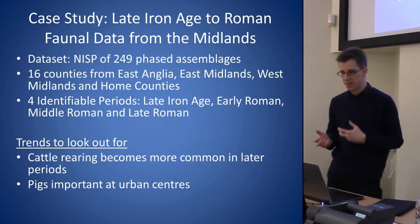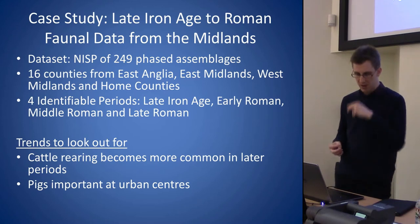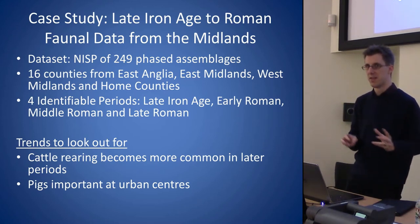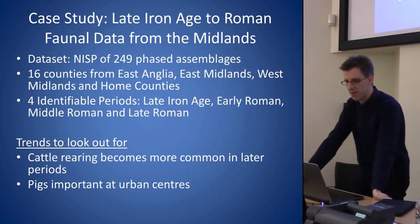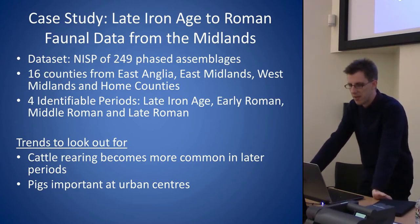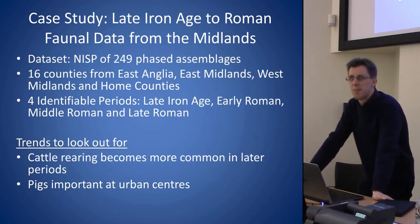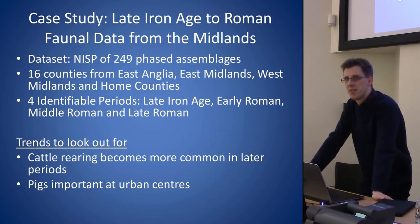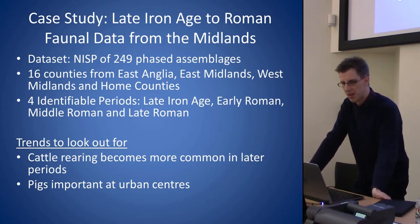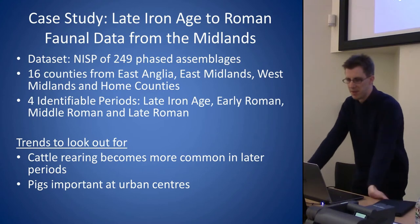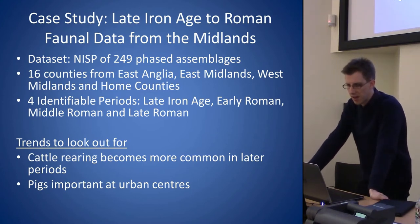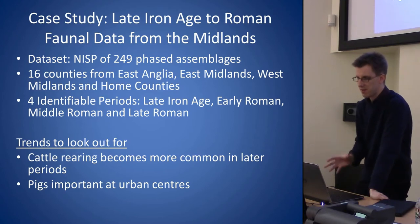What I want to talk about for the rest of this talk is a methodology I've been developing to get correspondence analysis into a GIS. This is data lent to me by Richard Thomas, from 249 assemblages from about 150 sites — some sites have one assemblage, some have up to four — coming from the middle bit of England: East Anglia, East Midlands, West Midlands, and some of the Home Counties. I've split the data into four main periods: Late Iron Age, Early Roman, Middle Roman, and Late Roman.